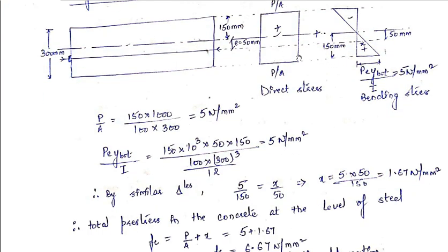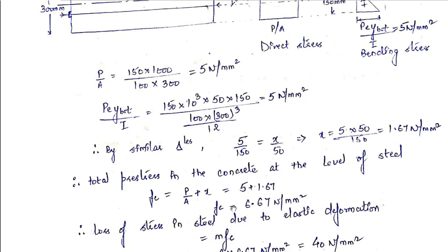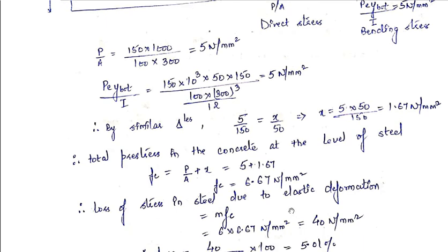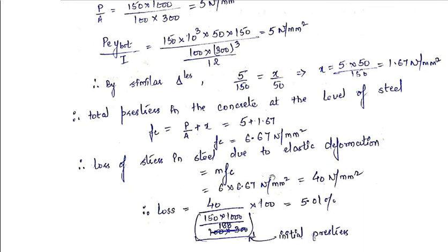The total stress in concrete at the level of steel, Fc = P/A + X = 5 + 1.67 = 6.67 N/mm². Therefore, the loss of stress in steel due to elastic deformation = m × Fc = 6 × 6.67 = 40 N/mm².